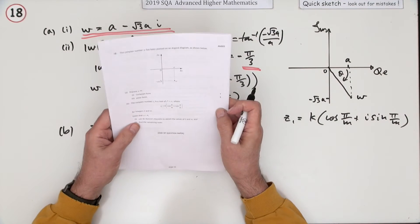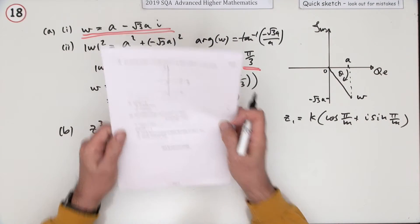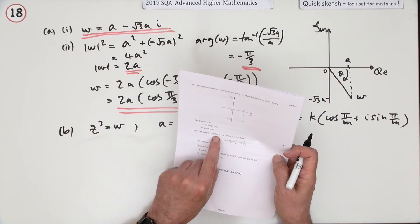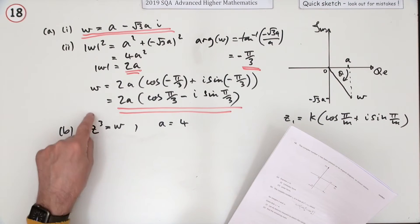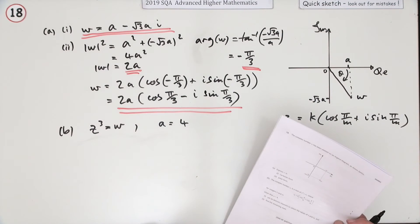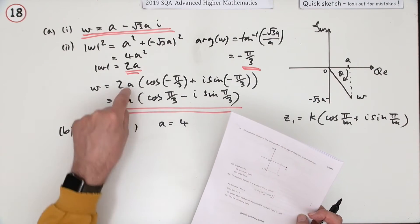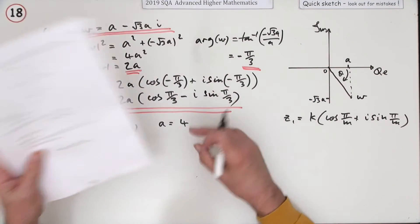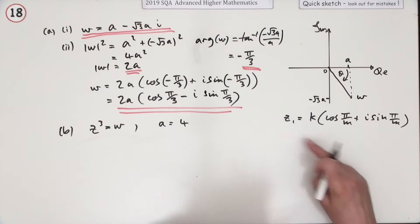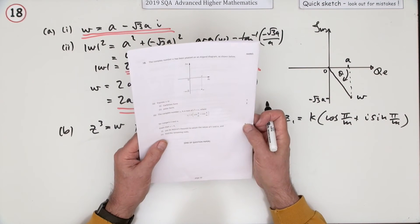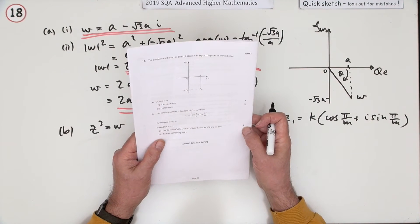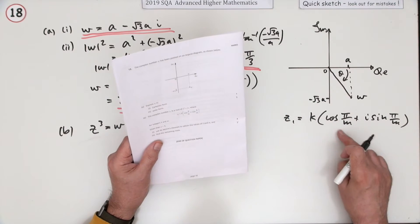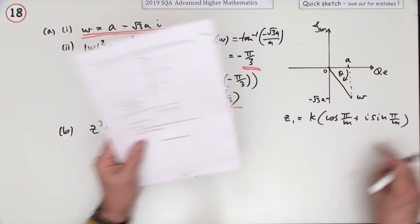Now part B. The complex number z is a root of z cubed equals this complex number you've already got. It's telling you also that a is going to be 4, so that means those a's have gone and now you've just got numbers. It also suggests that the first root should be written in this form. Well, for four marks, use De Moivre's to obtain the values of k and m when it's written in this form.